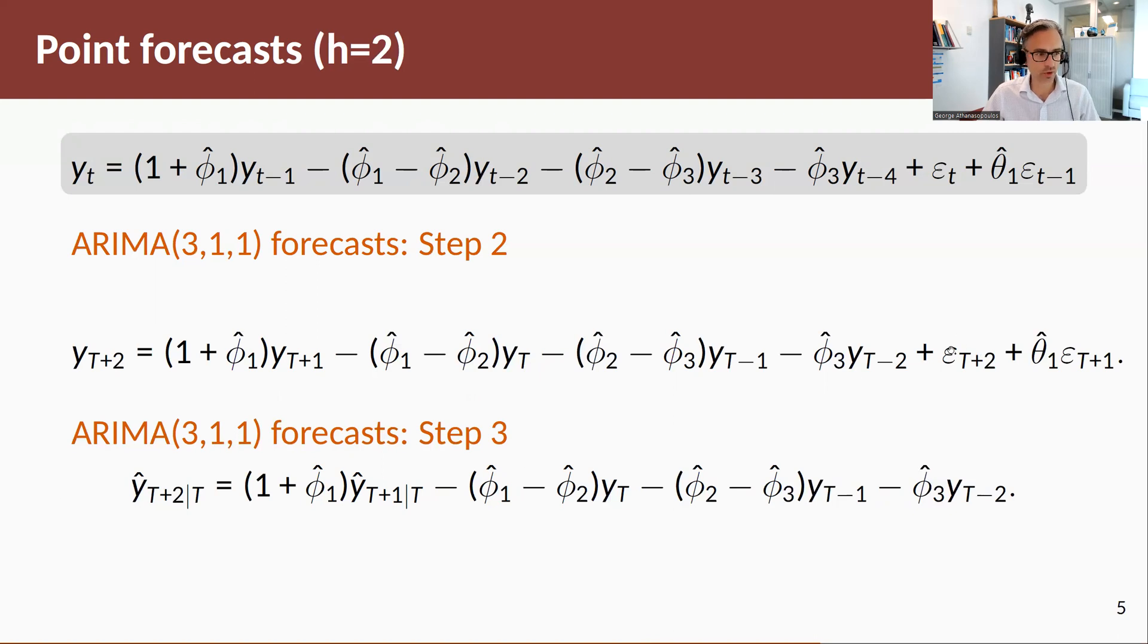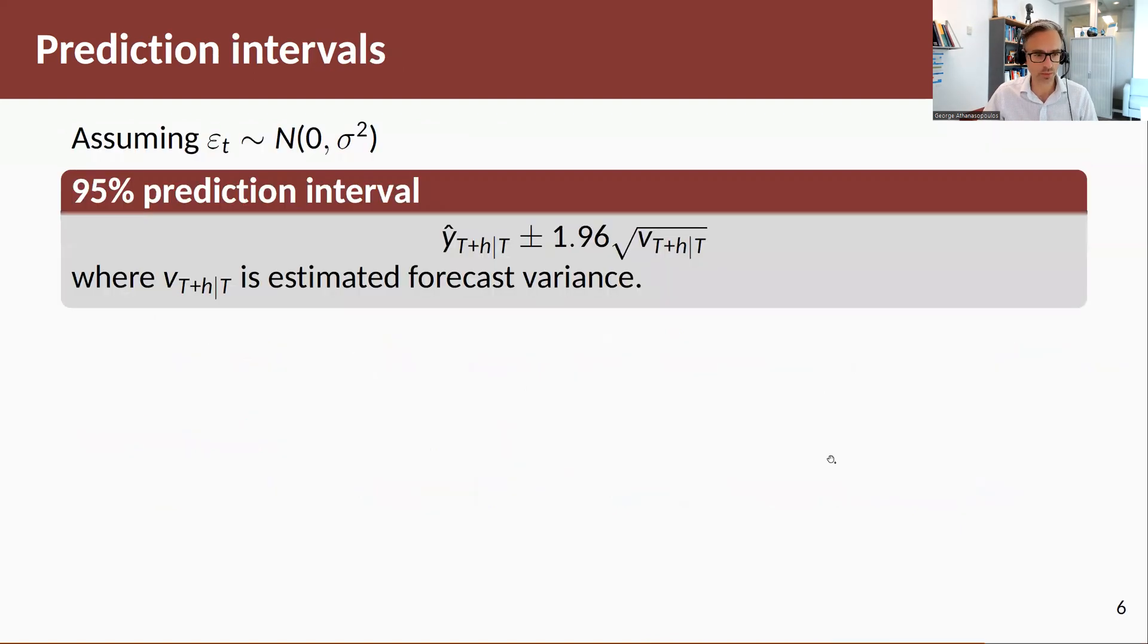And because I've gone over one step ahead and I only have one MA term, the MA is now zero. And of course the error is zero, the expected value of these. Hence, there's my two-step ahead forecast. And you do this over and over for more steps ahead.